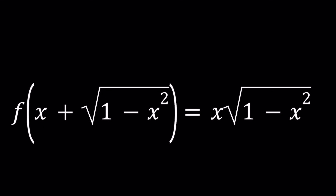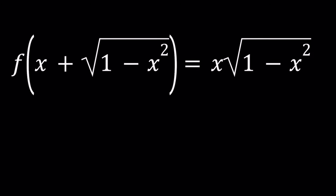Hello everyone. In this video, we're going to be solving a functional equation. We have f of x plus the square root of 1 minus x squared equals x times the square root of 1 minus x squared, and we're going to solve for f of x — in other words, find an expression for f of x in terms of x. I'll be presenting two methods. Let's start with the first one.